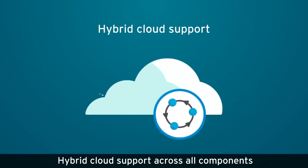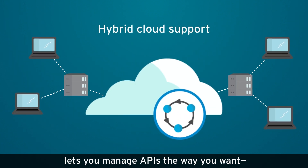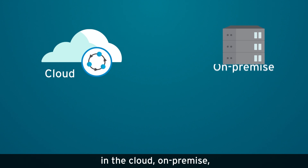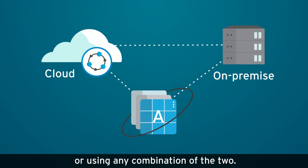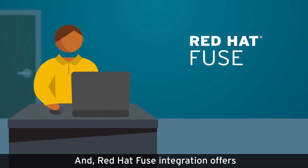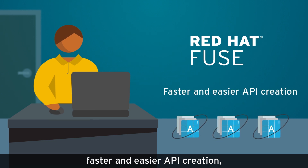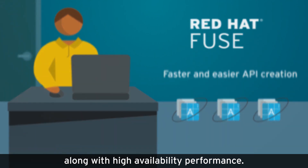Hybrid cloud support across all components lets you manage APIs the way you want — in the cloud, on-premise, or using any combination of the two. And Red Hat Fuse integration offers faster and easier API creation, along with high availability performance.